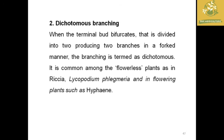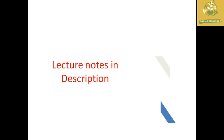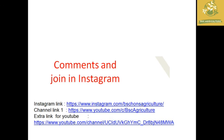The second major branching type is dichotomous branching, where the apex forks to produce two branches. This type is common in flowerless plants like Riccia and Lycopodium.